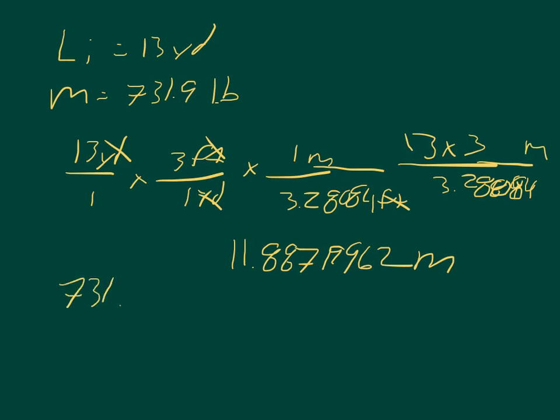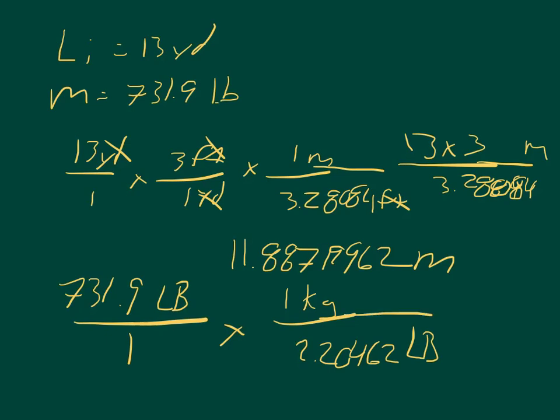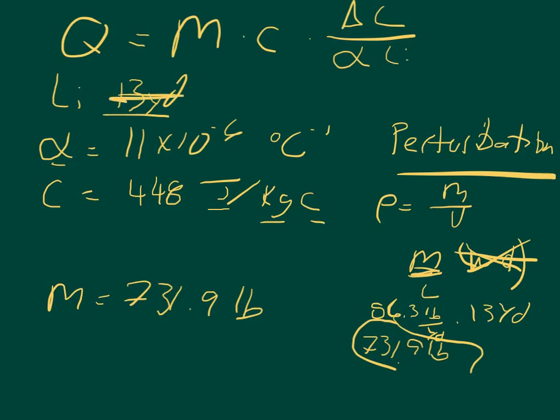And then for pounds, you have 731.99 pounds over 1, and we're going to multiply that by 1 kilogram over 2.20462 pounds. And so that's going to give you approximately 331.98479 kilograms. And so if we come back and plug these in, so we said that it's 11.887 meters, and the mass is going to be 331.9847 kilograms.